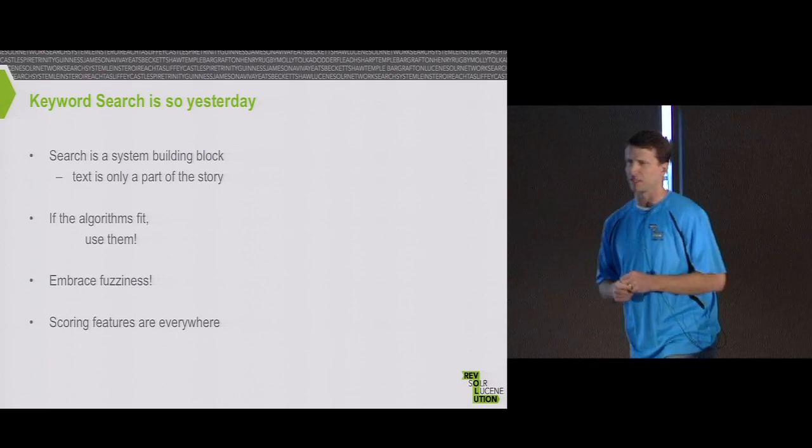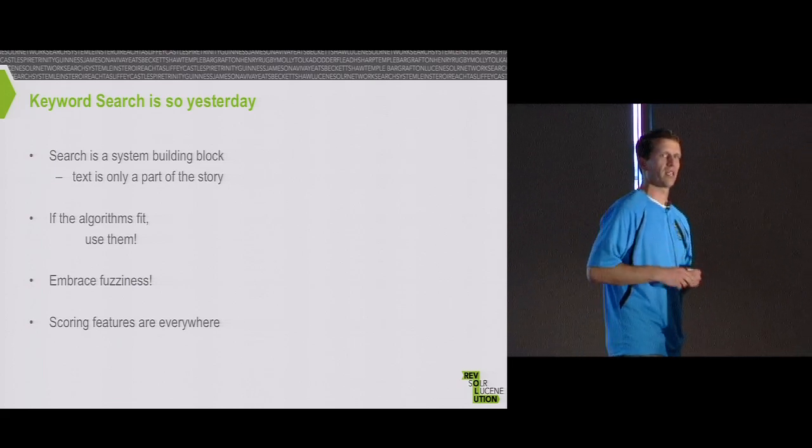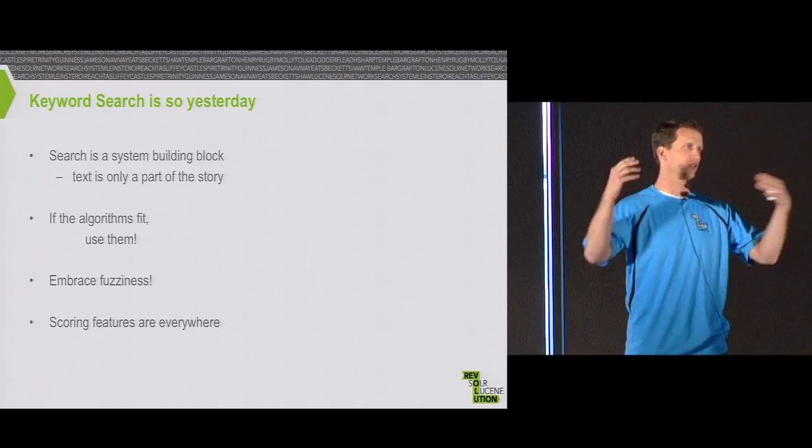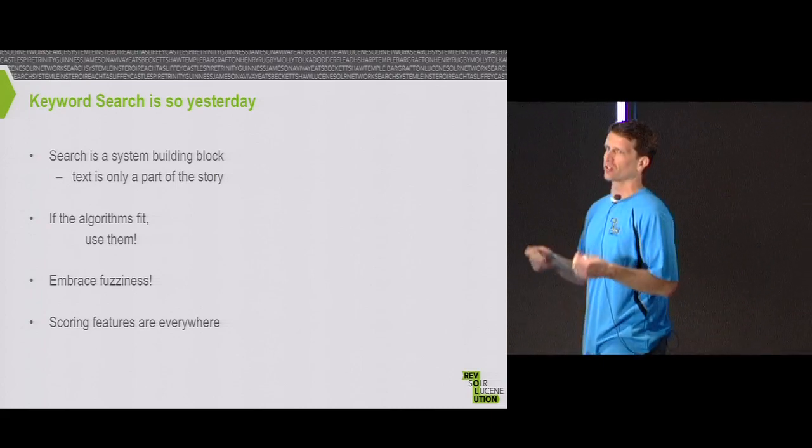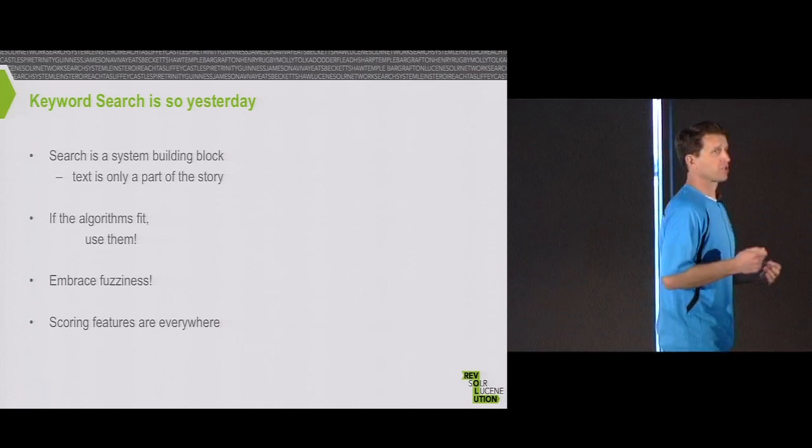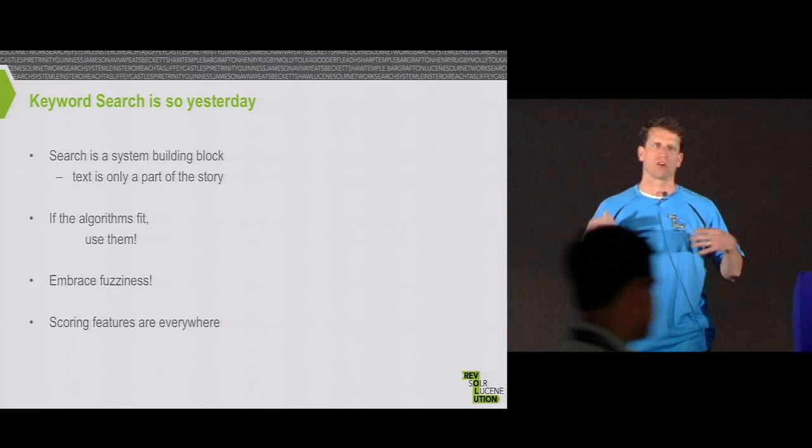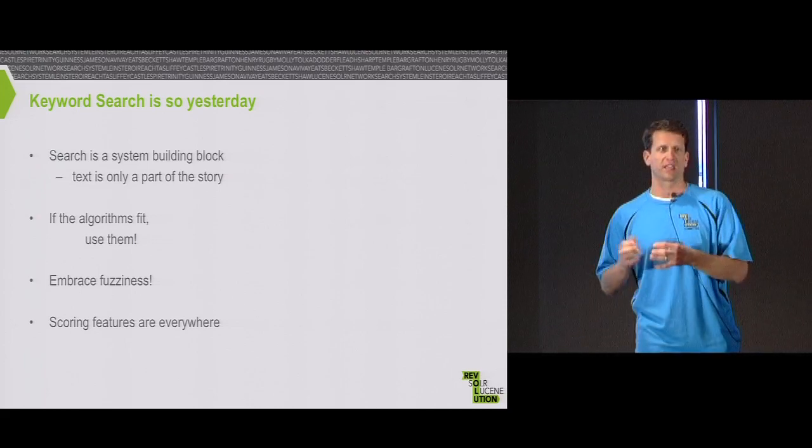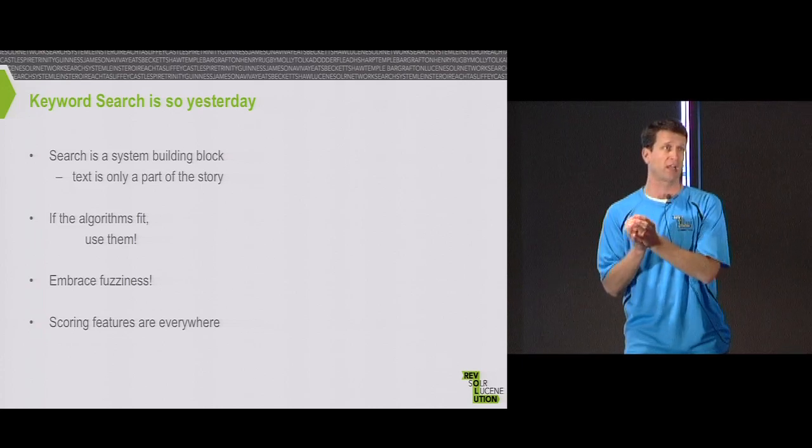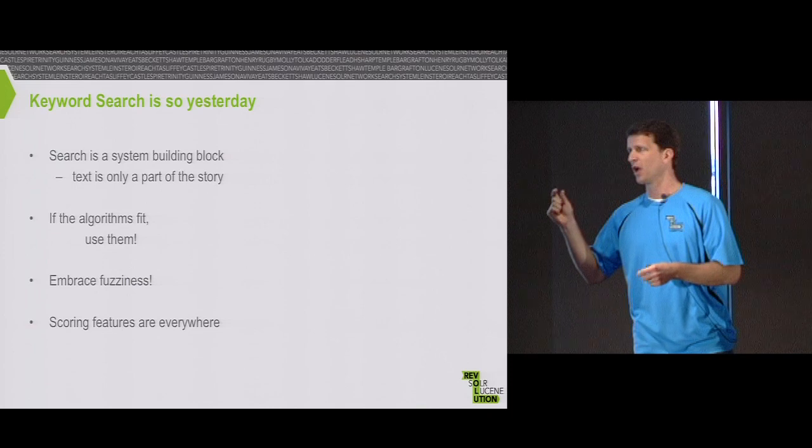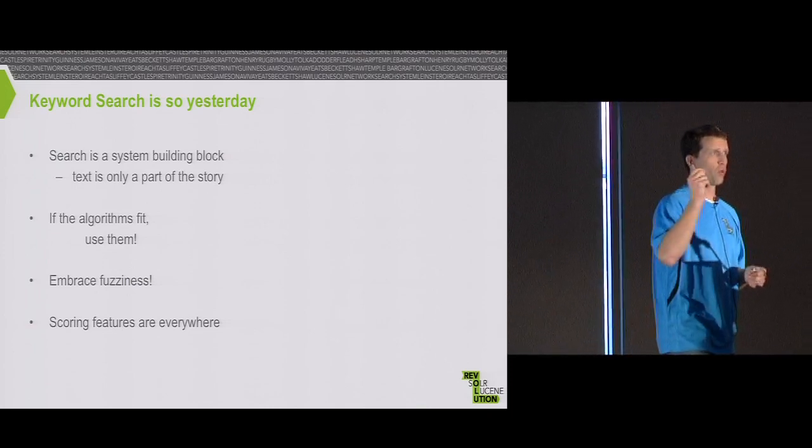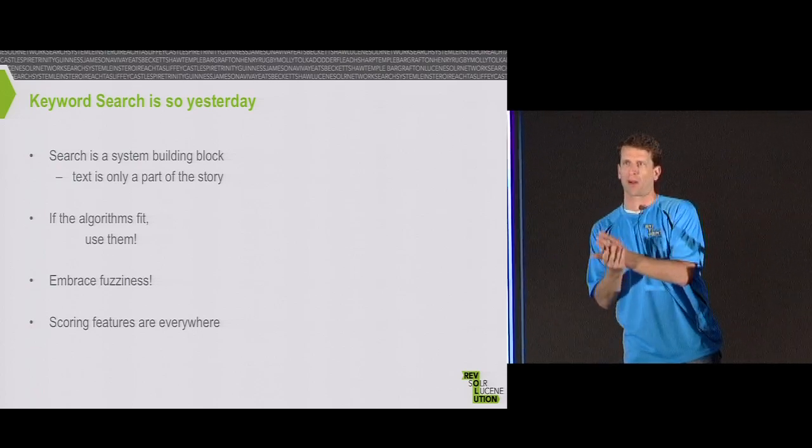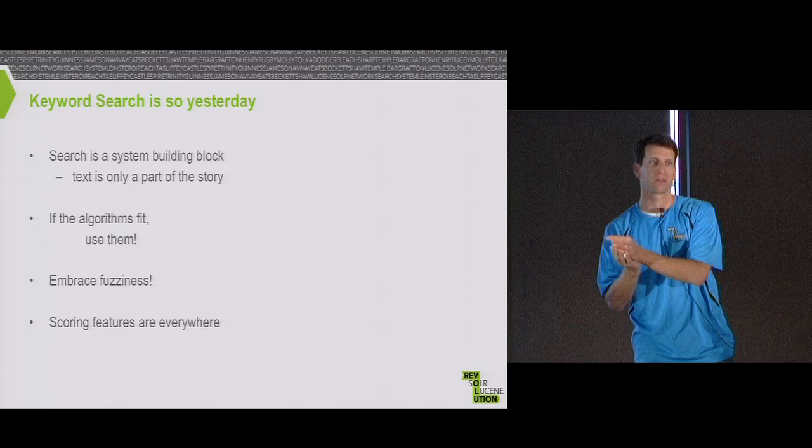I think anybody who's been paying attention or doing search in recent memory, you start to realize that doing that actual TF-IDF length normalization stuff is just a handful of the features you really care about in your actual application. Things like time and retweets and ratings and reviews - all of these things are also scoring features. The actual core keyword matching stuff that Lucene is so good at is just one small part of the scoring that you do in your application and what matters to your users.